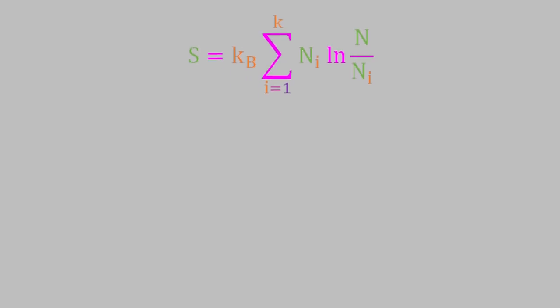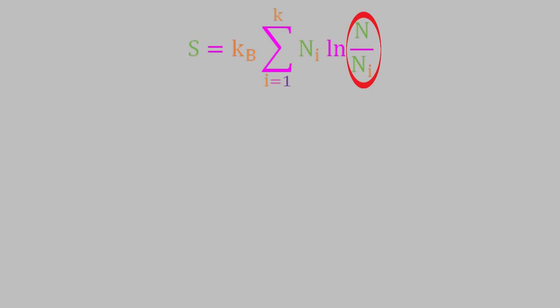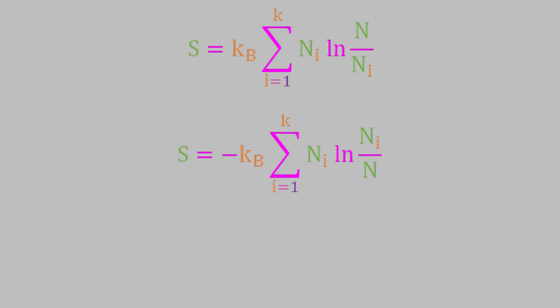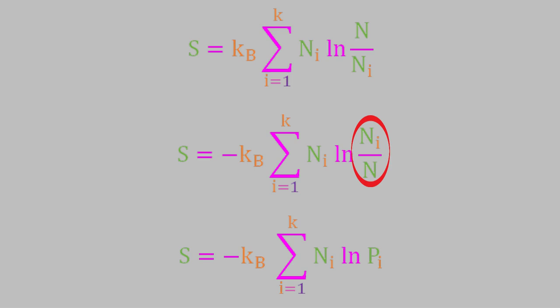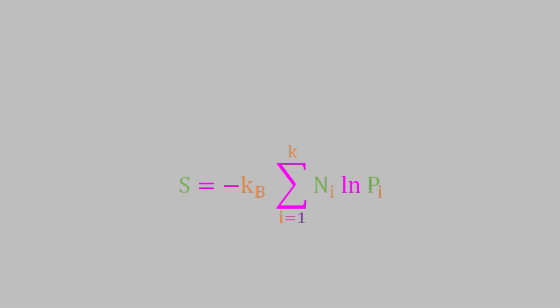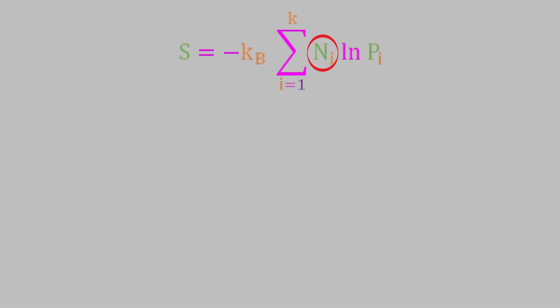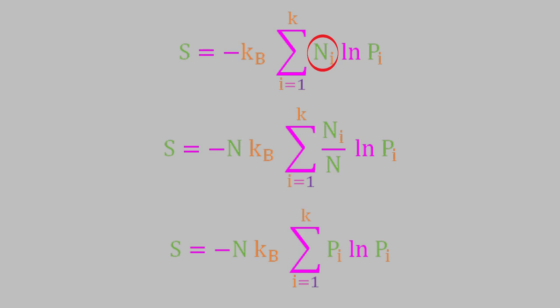We flip the fraction, changing the sign on the logarithm, giving us the sum of ni times the logarithm of (ni divided by N). The term ni over N is the number of particles in energy state i divided by the total number of particles — that's just the probability that a given particle will have energy state i. We can rewrite that using the symbol pi, and similarly ni over N becomes pi. To compensate for dividing by N in the summation, we multiply by a factor of N outside, which finally gives us the Gibbs entropy formula.